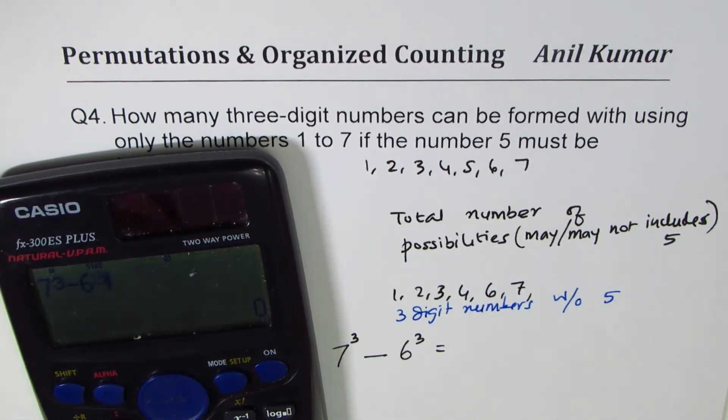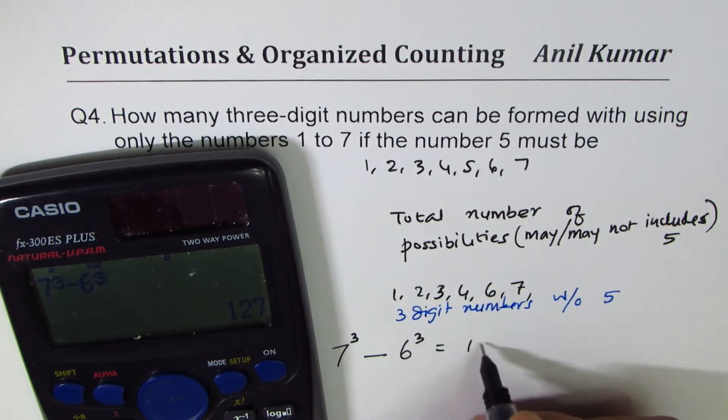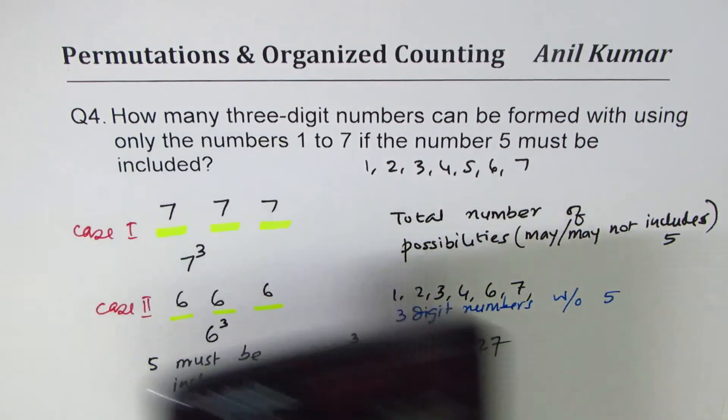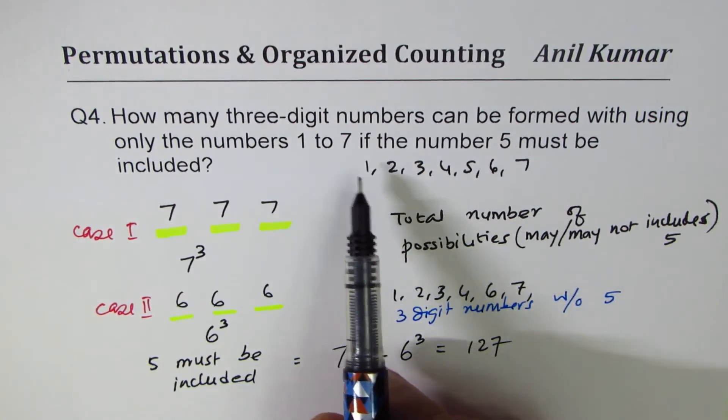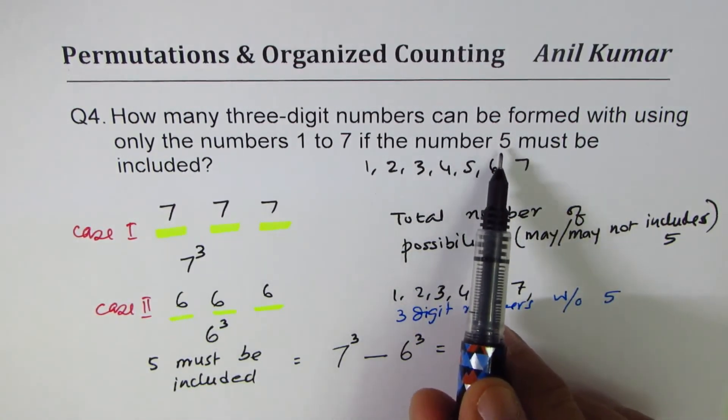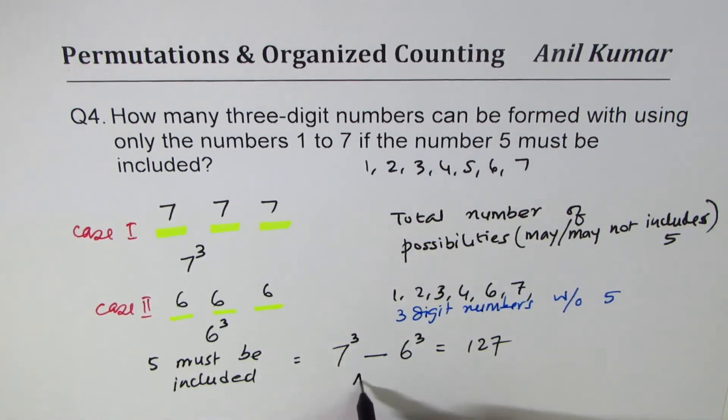Minus 6³, which is equal to 127. So there are 127 numbers which can be formed from these numbers 1 to 7 and which will include 5. So the answer is 127.